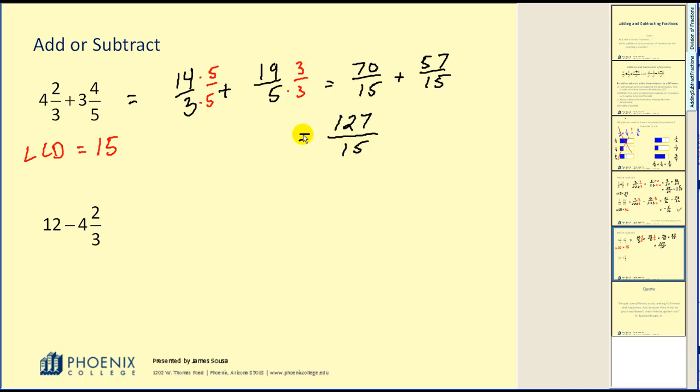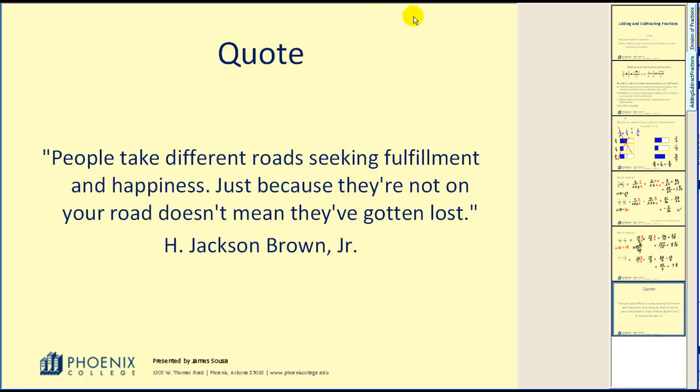Seventy plus fifty-seven would equal one hundred and twenty-seven-fifteenths. Since the original problem was a mixed number, we should give this back as a mixed number. So, what we would need to do now is take one hundred and twenty-seven, divide it by fifteen. Fifteen goes into one hundred and twenty-seven eight times with the remainder of seven. Therefore, our mixed number would be eight and seven-fifteenths. I hope that helps. Have a great day.